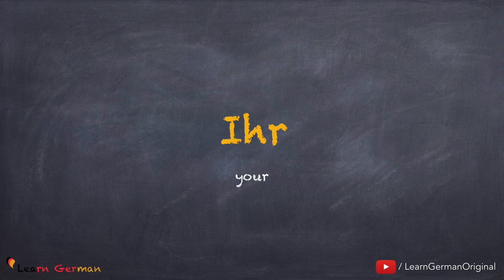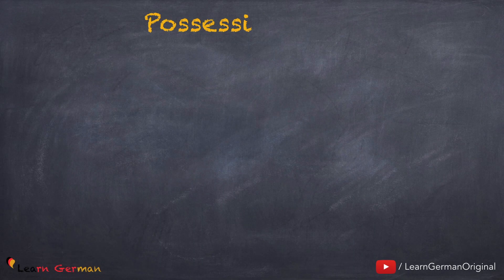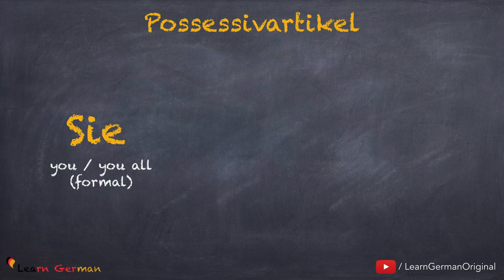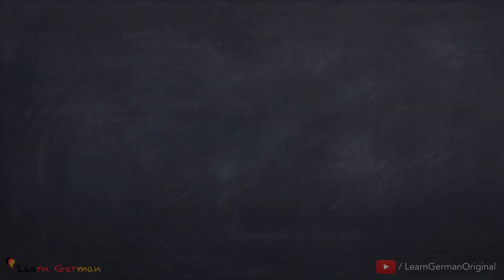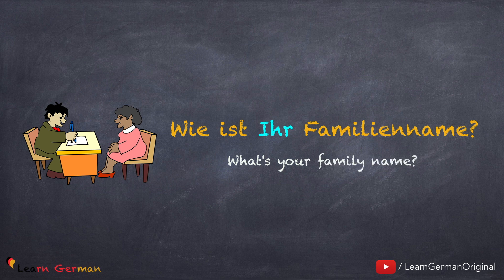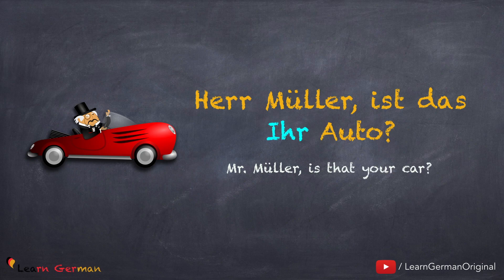Let's look at the first case: Ihr großgeschrieben. In formal situations, you would use Ihr with a capital I as a possessive article. It is used as a possessive article for Sie. You could use Ihr or Ihre. In a formal situation, you would ask, 'Wie ist Ihr Familienname?' In this case, you would use Ihr with a capital I. Similarly, 'Herr Müller, ist das Ihr Auto?' The car belongs to Mr. Müller, the situation is formal. You would use the personal pronoun Sie, but here we need a possessive article. Hence, the correct possessive article here is Ihr großgeschrieben.